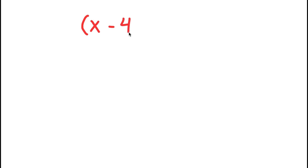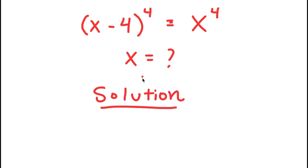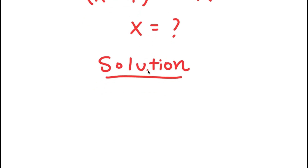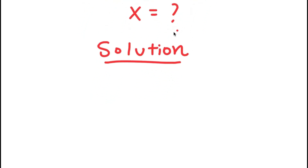In this equation, I have (x − 4) to the power of 4 is equal to x to the power of 4. My only variable is x, so that's what I'm going to be solving for. For my solution, I'm first going to start by subtracting x to the power of 4 on both sides.